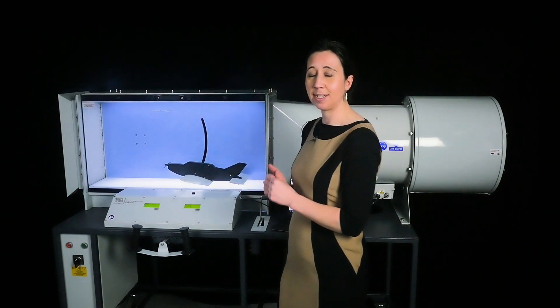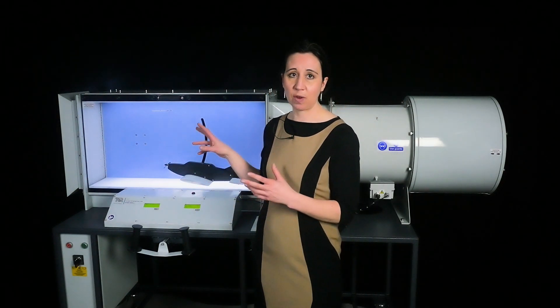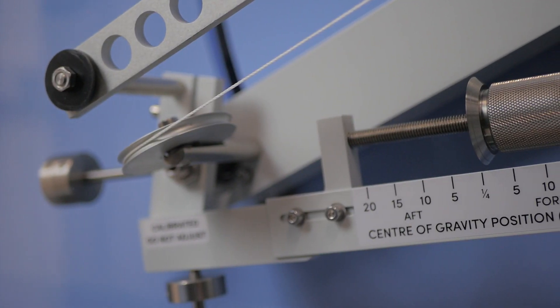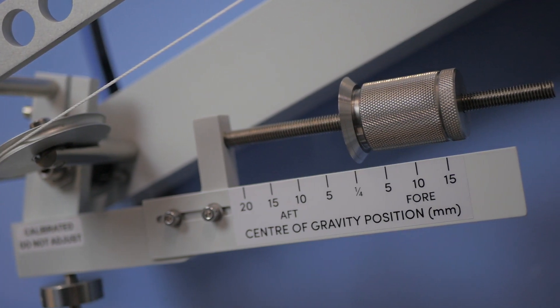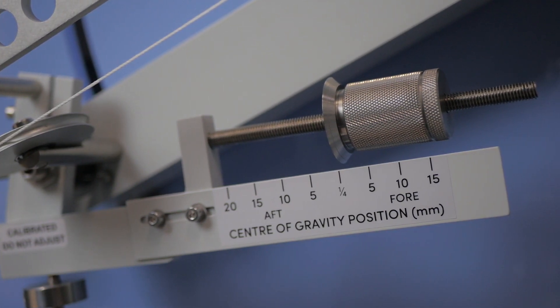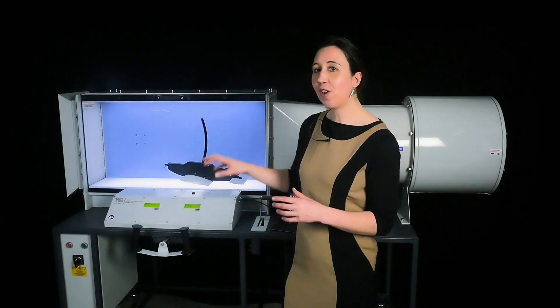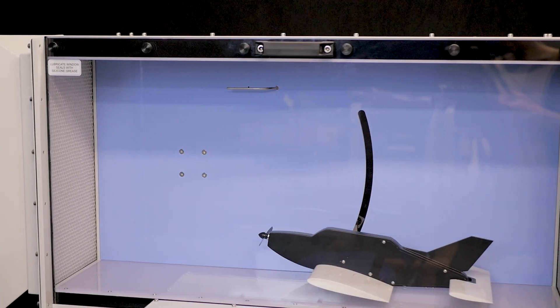Back to the apparatus, there is an adjustable weight on the aircraft model to allow you to set the center of gravity to different positions from fore to aft of the quarter chord point. These scales show the exact position. As you can see, the working section is brightly illuminated. At the front here is a large transparent window.